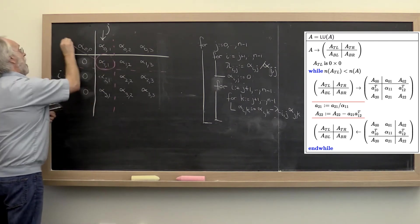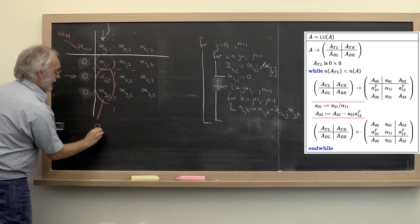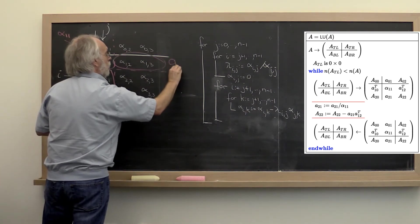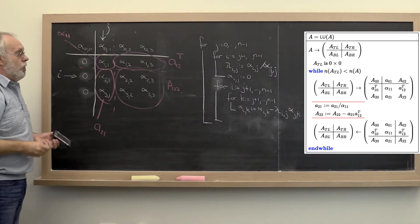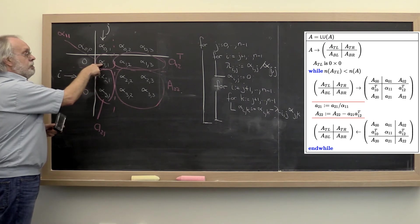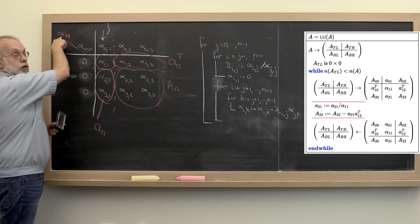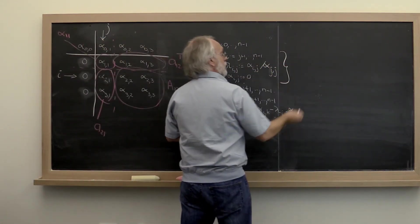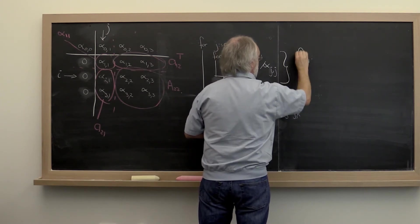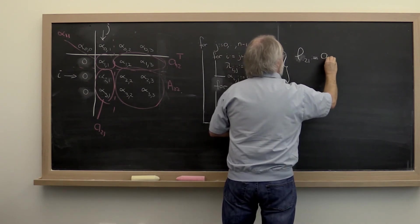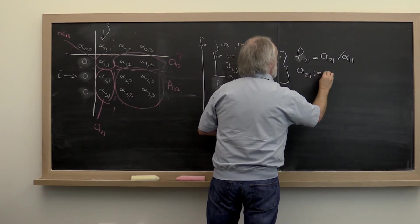Then we expose alpha_1,1, not to be mistaken for alpha_1,1. So this entry right here is alpha_1,1 in our FLAME notation. This vector right here is a_2,1. This row right here is a_1,2 transpose, and this submatrix right here is a_2,2. Taking these elements and one by one dividing them by alpha_1,1 is the same as taking this vector a_2,1 and dividing it by alpha_1,1. This loop creates a_2,1 and sets it to a_2,1 divided by alpha_1,1, and then sets it to a 0 vector.